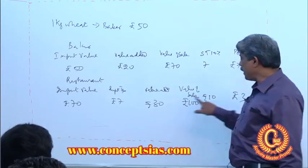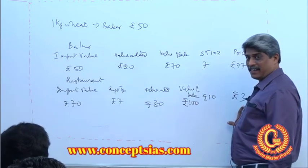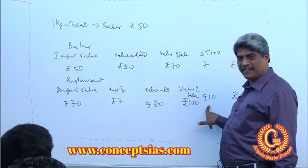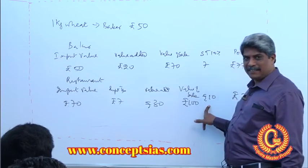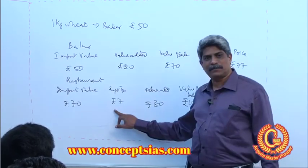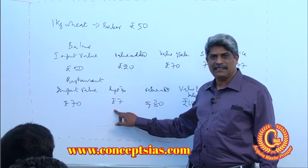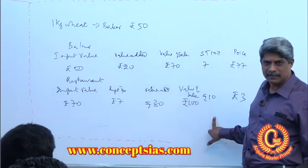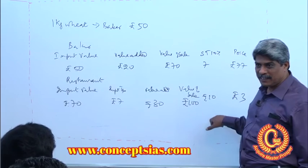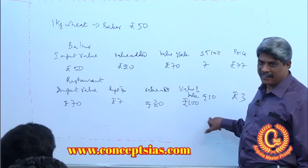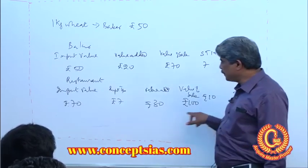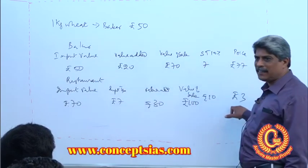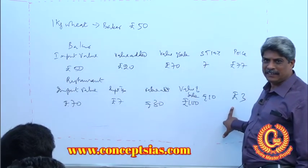How do we arrive at 3? Total tax collected minus tax on input. This is called the input tax credit system. By using this input tax credit system, we arrive at a value added tax.